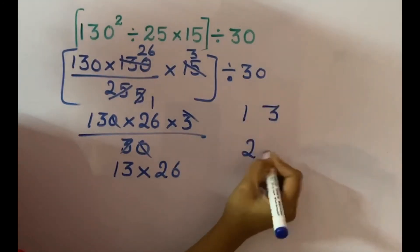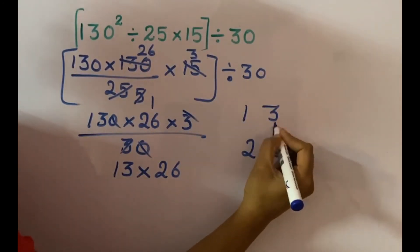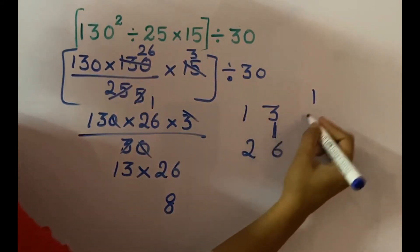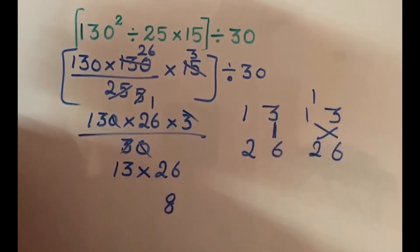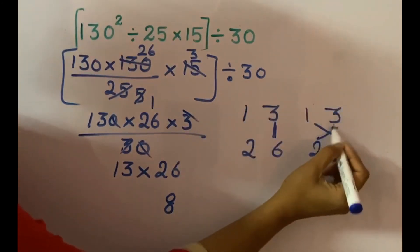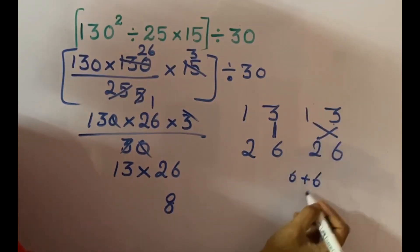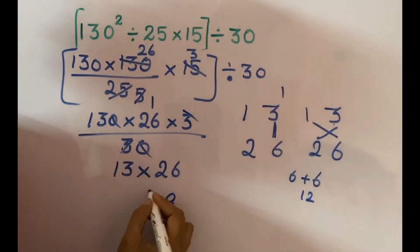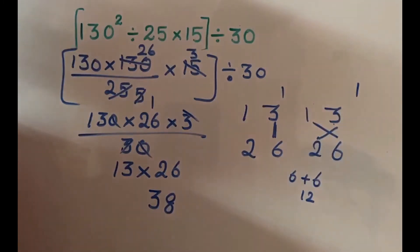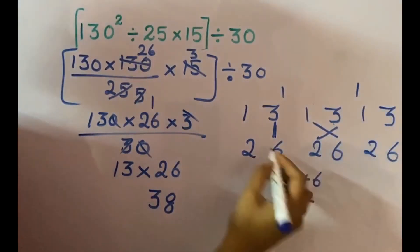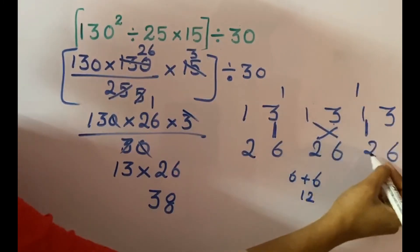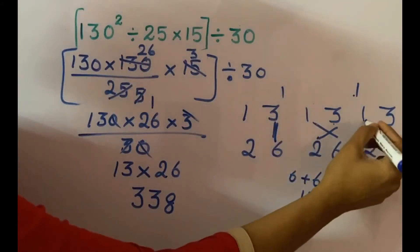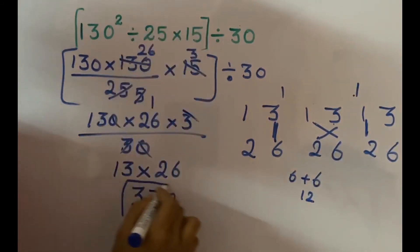To do the multiplication of 13 and 26: first the unit digit — 3 sixes are 18, write 8 and carry 1. Then cross multiplication: 3 twos are 6, plus 1 six is 6; 6 plus 6 is 12, plus carry 1 is 13 — write 3 and carry 1. Then vertical multiplication of tens: 1 twos are 2, plus 1 is 3. So this expression result is 338.